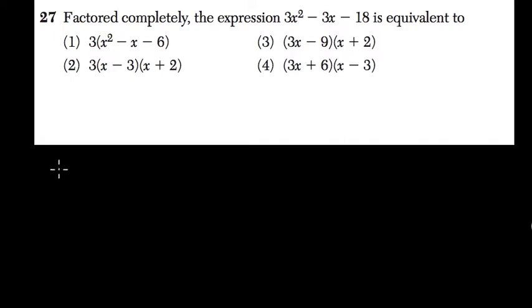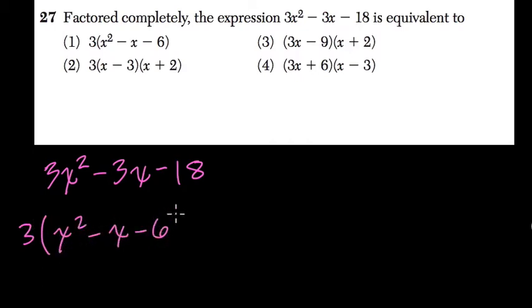So we're factoring a quadratic, and I noticed right away that I have 3x squared minus 3x minus 18, which is a multiple of 3. So what I can do is factor out 3 and rewrite it like this: 3 times x squared minus x minus 6. These are equivalent.